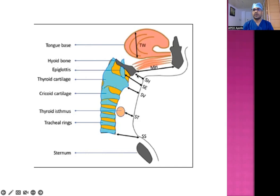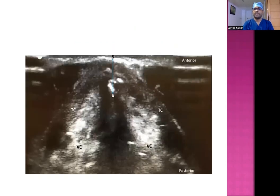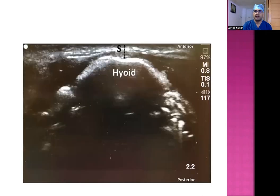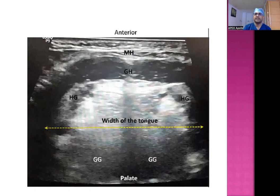They found that if the pretracheal soft tissue thickness is greater, the patient may have a difficult laryngoscopy. Measurable levels include skin to hyoid cartilage, skin to epiglottis, skin to vocal cords, and skin to trachea thickness. The sonographic view depicts skin to arytenoid cartilage level, skin to thyroid isthmus level, and skin to hyoid cartilage level using the curvilinear probe. The width of the base of the tongue can also be measured as a predictor for difficult laryngoscopy.